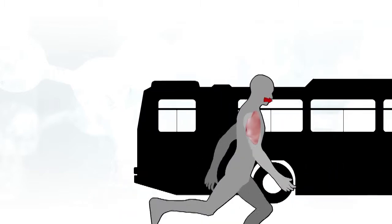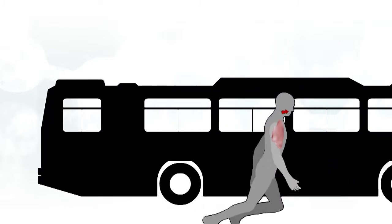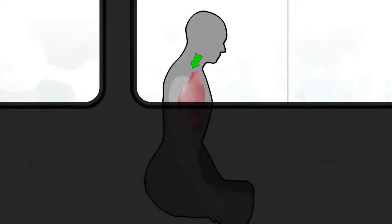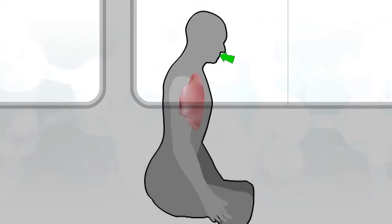At certain times, the cells in our body require more oxygen, so our body compensates by changing respiration, meaning how often and how much air we breathe in.